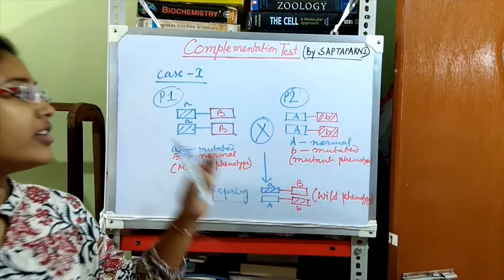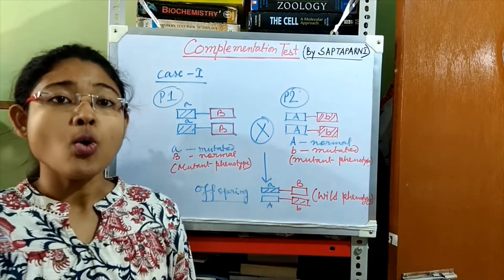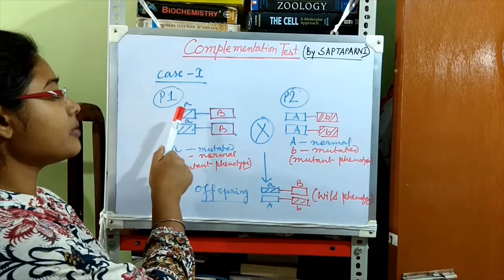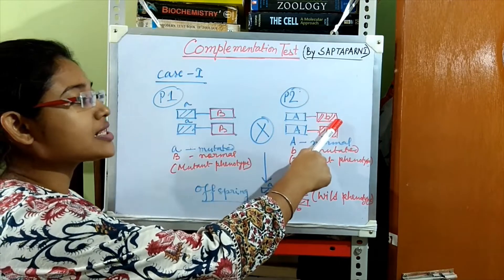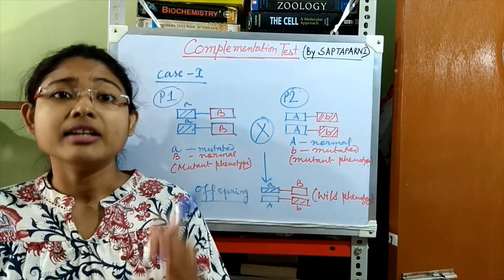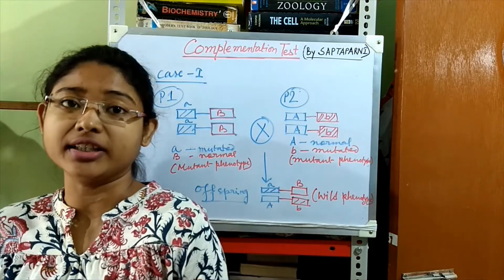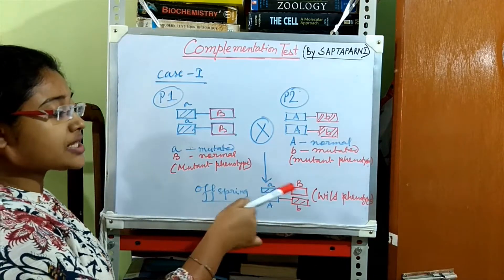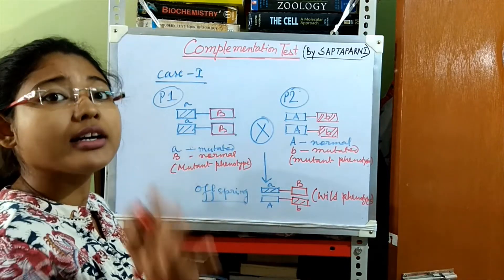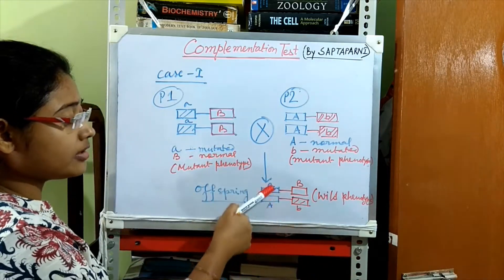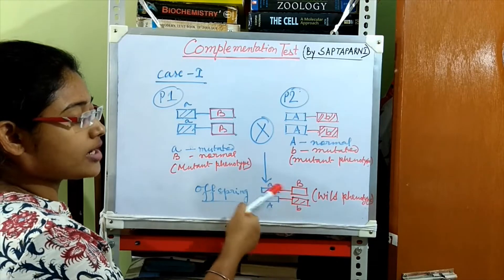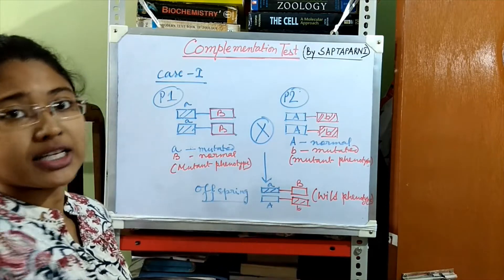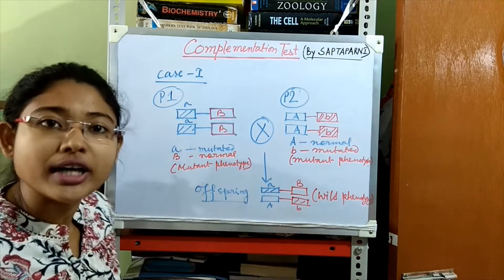What is evident from here is that when the mutations are in different genes — one mutation in the A gene and another in the B gene — the mutations can complement each other. This is the complementation test. The mutations in trans position complement each other to produce the wild phenotype.